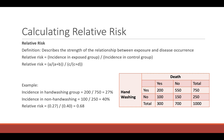First, we calculate the incidence in the hand-washing group, which in our example is 27%. Then we calculate the incidence in the non-hand-washing group, which is 40%. To get the relative risk, we divide 0.27 by 0.4, and we get a relative risk of 0.68.